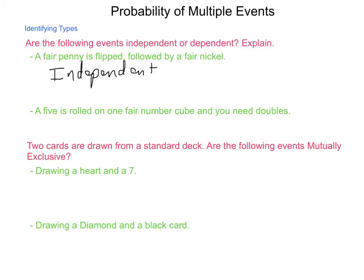Next, a five is rolled on a fair number cube and you need doubles. Does this first event, the five being rolled, have influence on rolling doubles? And the answer is yes. Since I already have a five, there is now only one way that I can roll a double, and that is to roll another five. So the outcome of the first event does influence the outcome of future events.